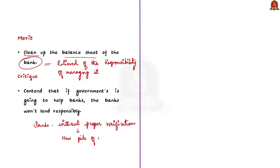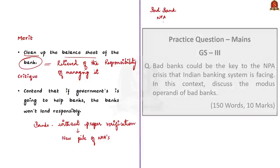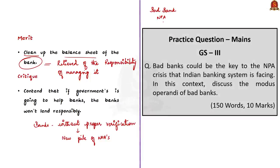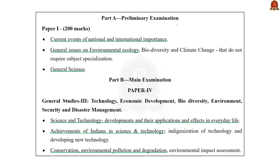So this is all about bad banks. To quickly recap, in this discussion we saw about a bad bank, non-performing assets, the currently set-up bad bank — its structure, functioning, merits, as well as the criticism. Now let's move on to the next news article.